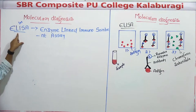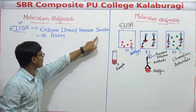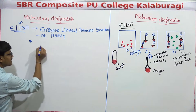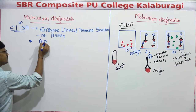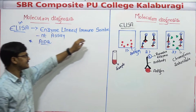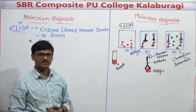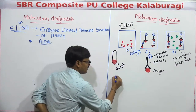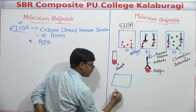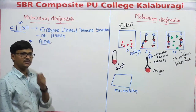ELISA stands for Enzyme-Linked Immunosorbent Assay. This method is mainly used for identifying or confirming cases of disease. When an ELISA process is started in a laboratory, there is a small plate-like structure called a microtiter plate, also called a microwell tube, which has numerous small well-like structures.